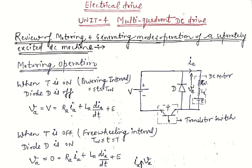We will see how to control the speed by controlling the duty cycle. The basic topic here is a review of motoring and generating modes of operation of a separately excited DC motor. First, we look at the chopper structure having switch T, which is made up of a transistor switch, a freewheeling diode, and the DC motor load represented as RLE. V is the DC input to the armature. In the motoring mode, when T (the transistor switch) is ON, this mode is known as the powering interval, because input power is delivered to the output. This mode corresponds to 0 ≤ t ≤ T_on.